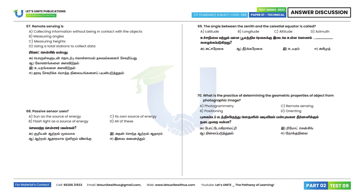Question 67: Remote sensing is collecting information without being in contact with the object. Option A is the correct answer. Question 68: A passive sensor uses the sun as the source of energy. Option A. Question 69: The angle between the zenith and celestial equator is called latitude. Option A.